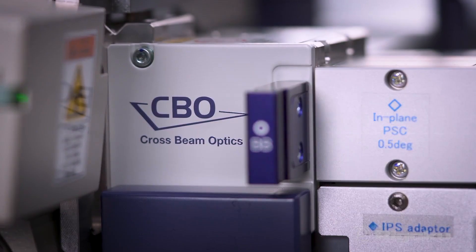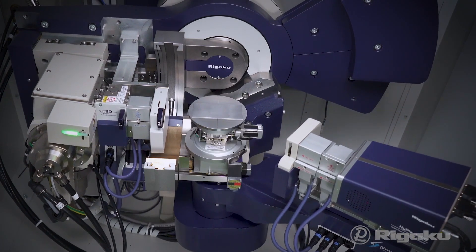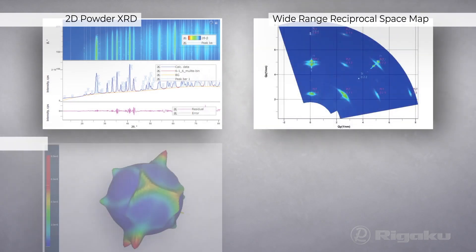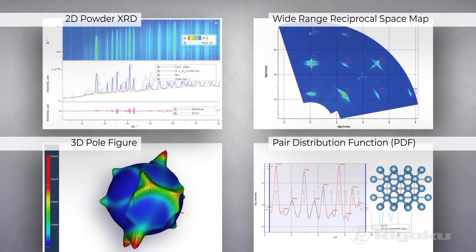With SmartLab's CBO technology and five-circle goniometer, scientists have access to more complex experiments that are easier to perform.